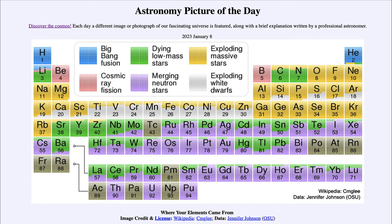That does not mean that we know all of these perfectly — this periodic table is based on our best current estimates as to where these elements come from. It is noted that some, such as copper, are not really well known, and there may be some changes as more models and research give us better ideas of where each element comes from.